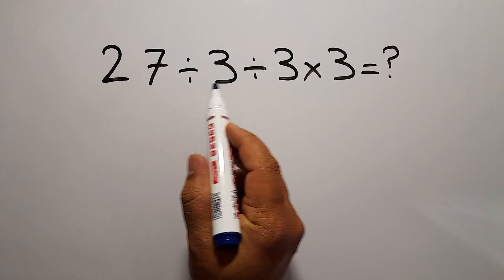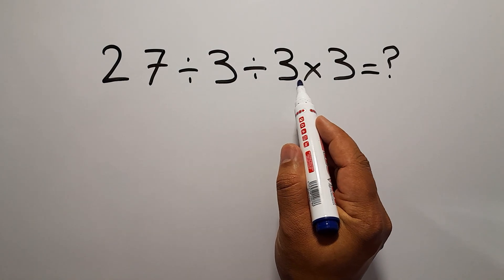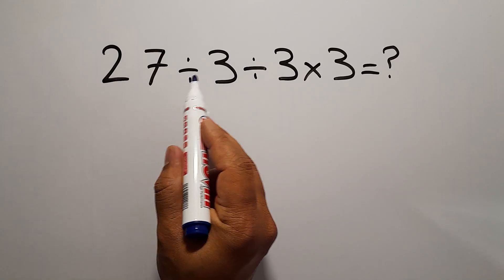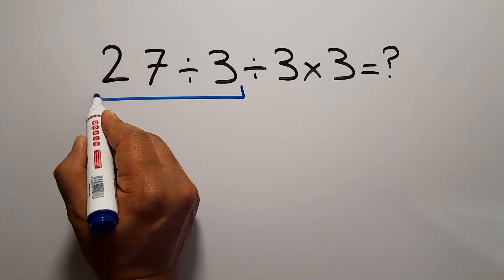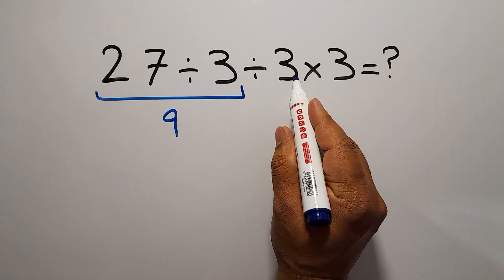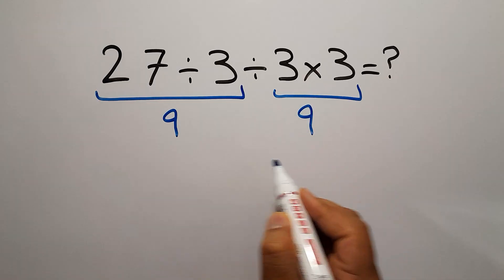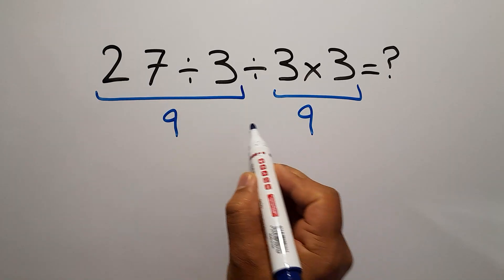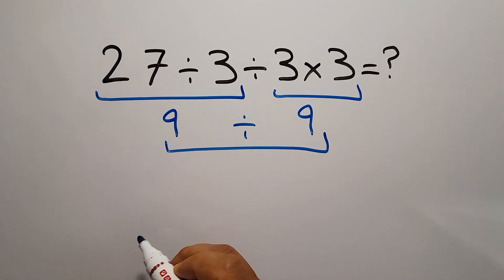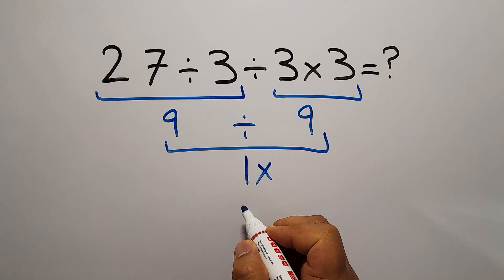27 divided by 3, divided by 3, then times 3. 27 divided by 3 gives us 9. And here we have 3 times 3, which equals 9. So 9 divided by 9 — 9 divided by 9 is just 1. But this answer is not correct.